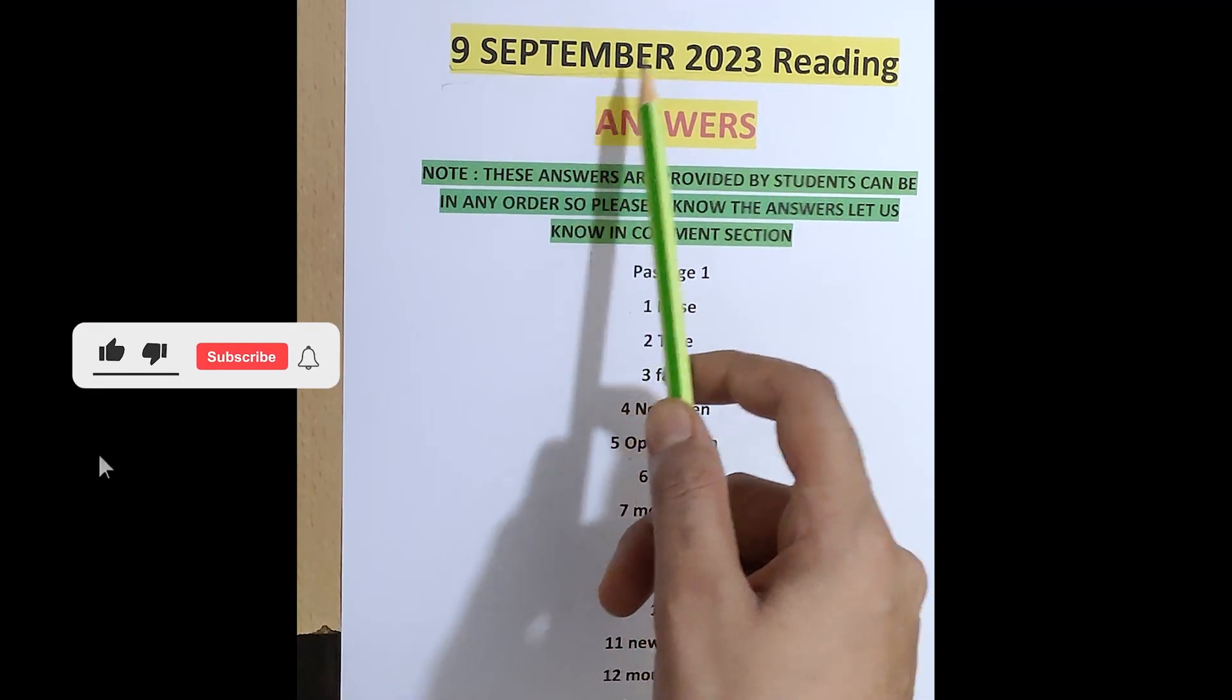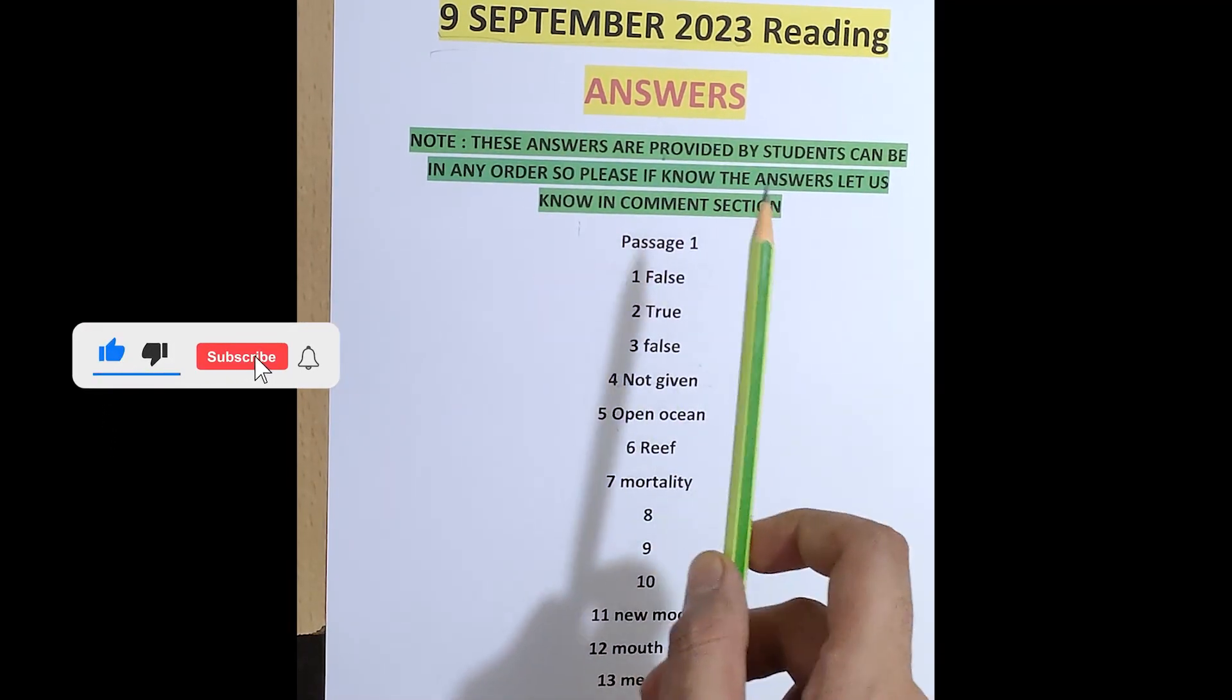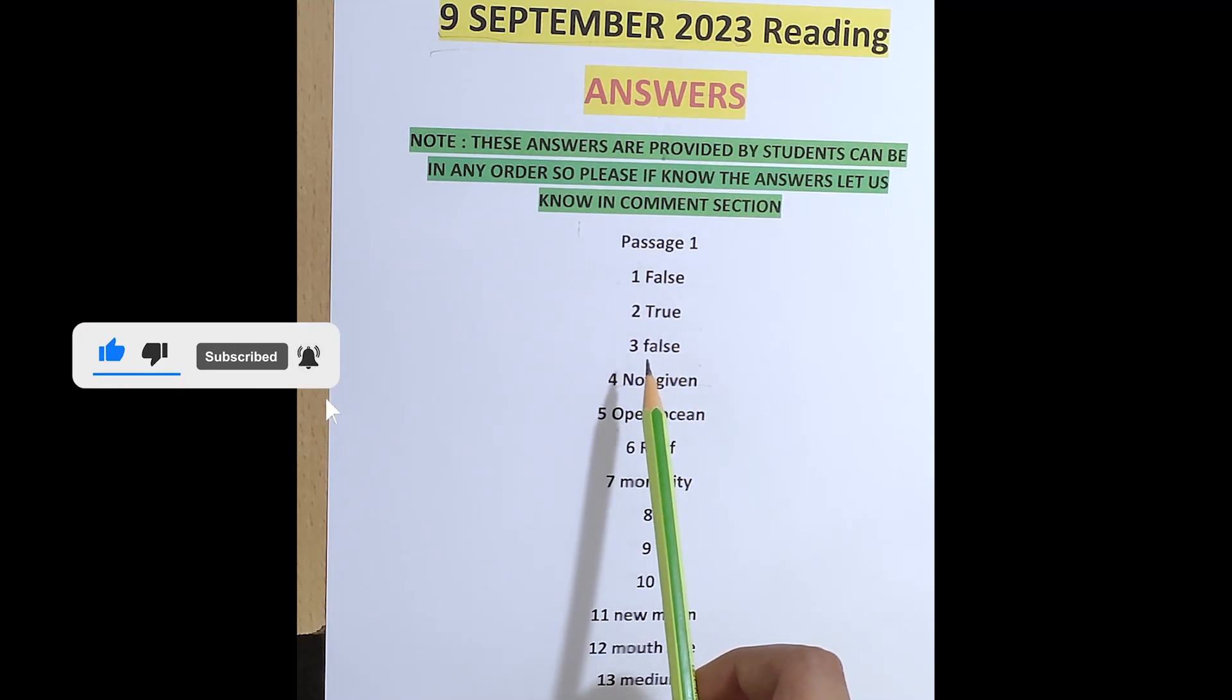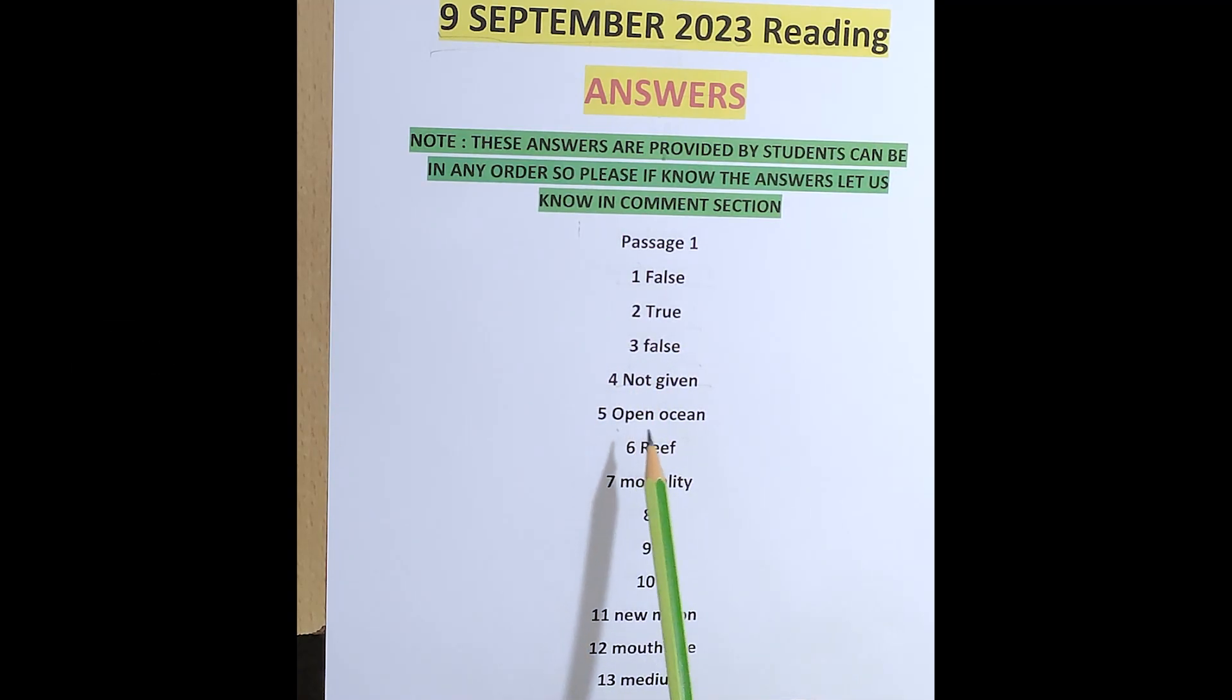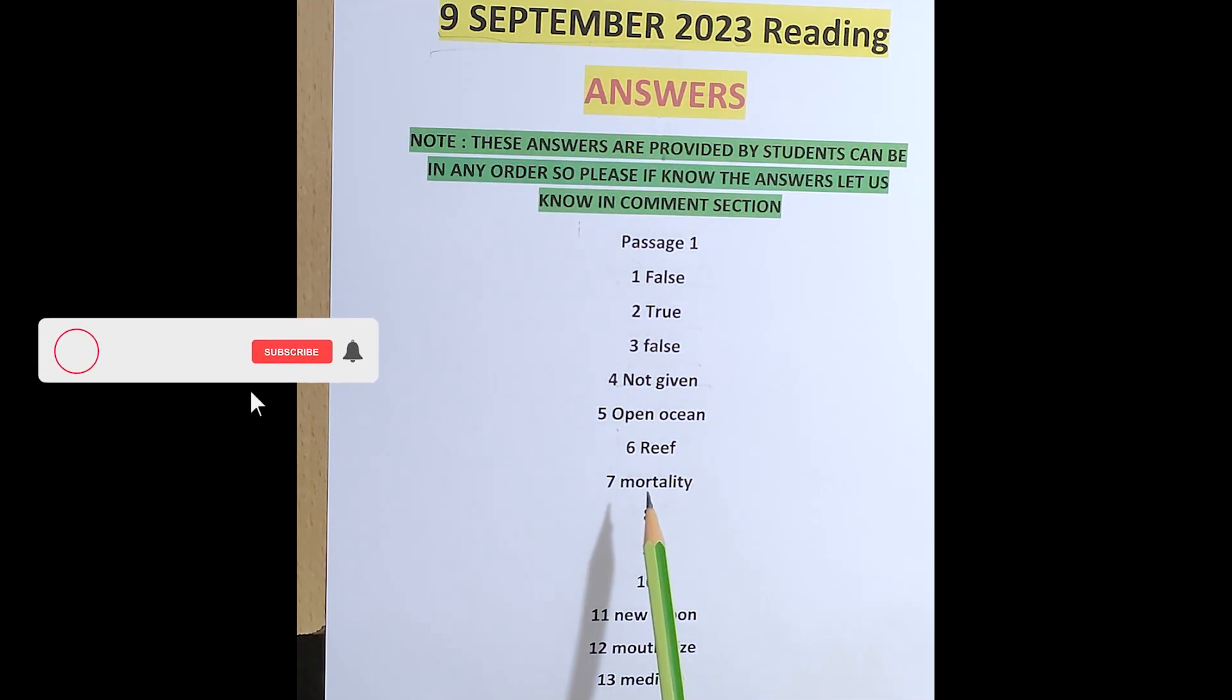9th September Reading Answers. Pelae Falls True, False, Not Given. Open Ocean Reef, Morality 8th 9th 10th Ka Padaani.